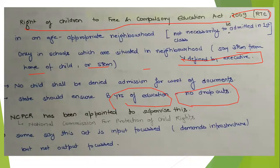The fourth important provision in this Act was that private unaided schools are obliged to admit or enroll children from the weaker sections of society or disadvantaged communities in the age group of 6 to 14 years — up to 25 percent of their seats. The government will compensate schools for providing this free education.